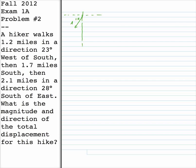The first vector A has a magnitude of 1.2 miles in a direction 23 degrees west of south. Vector B is 1.7 due south. Vector C goes off making an angle of 28 degrees south of east, with a magnitude of 2.1. So my resultant vector is going to have a relatively small x-component and a relatively large negative y-component. We'll see if that plays out.